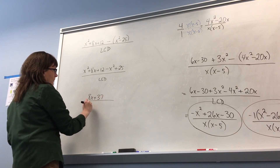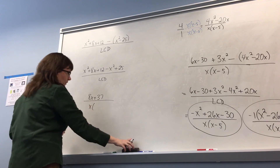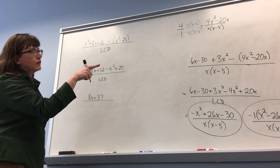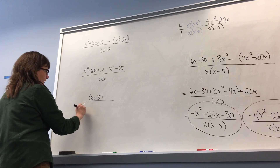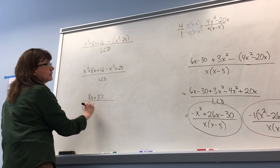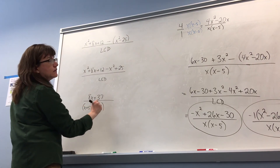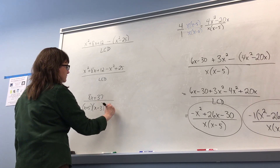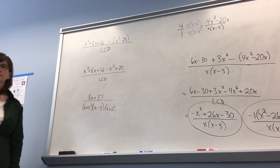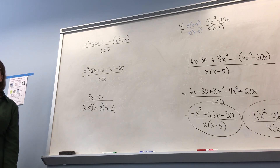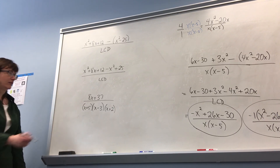I'm getting close to the end, so I'm going to write my denominator back in. Looking back at where I wrote it down: it's x plus 5 times x minus 3 times x plus 2. Is there anything I can do to simplify? Can I factor 8x plus 37? No. So this is it — that's my answer.